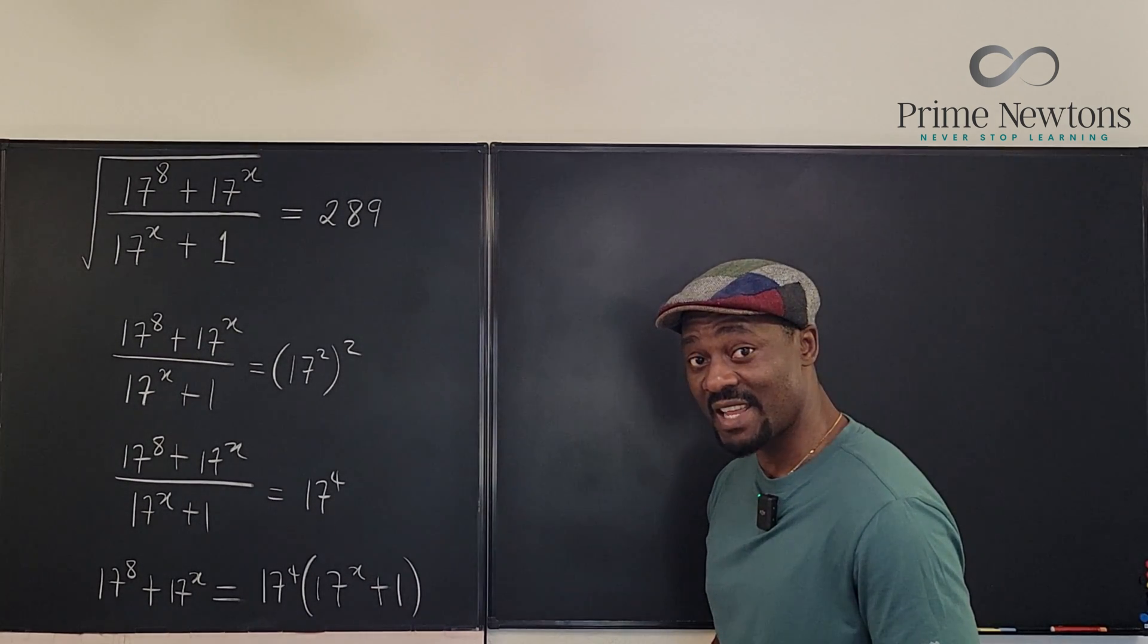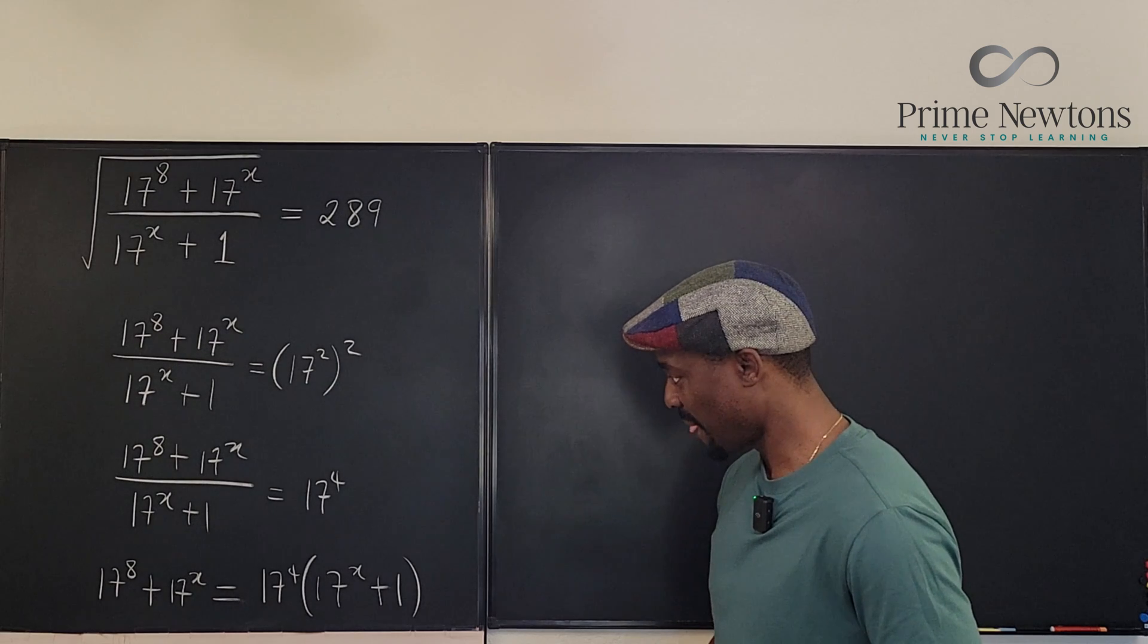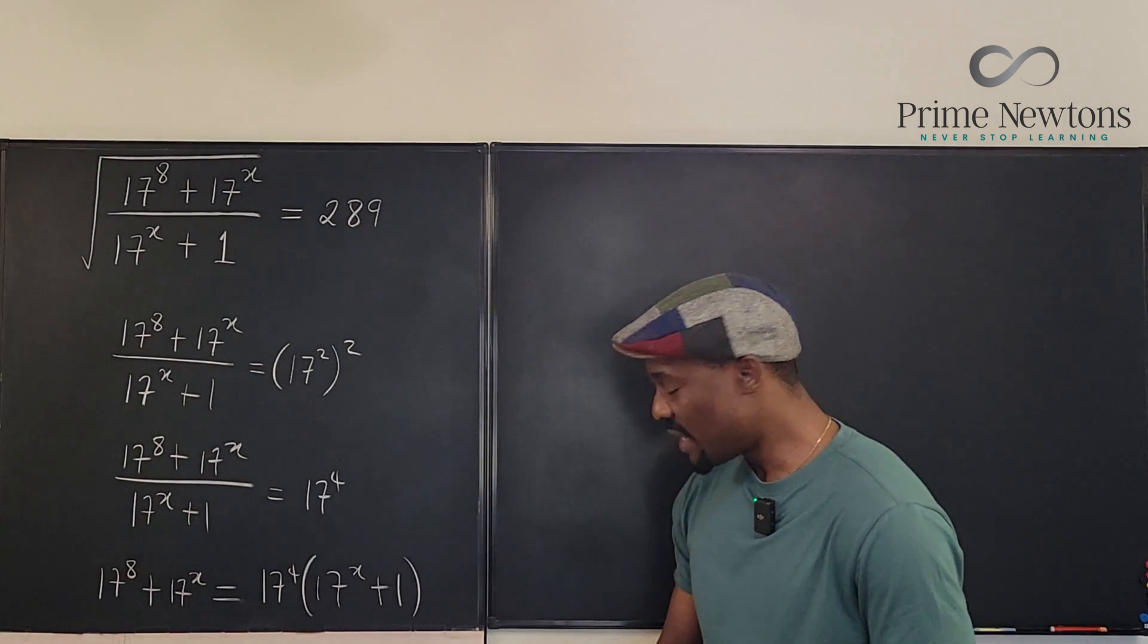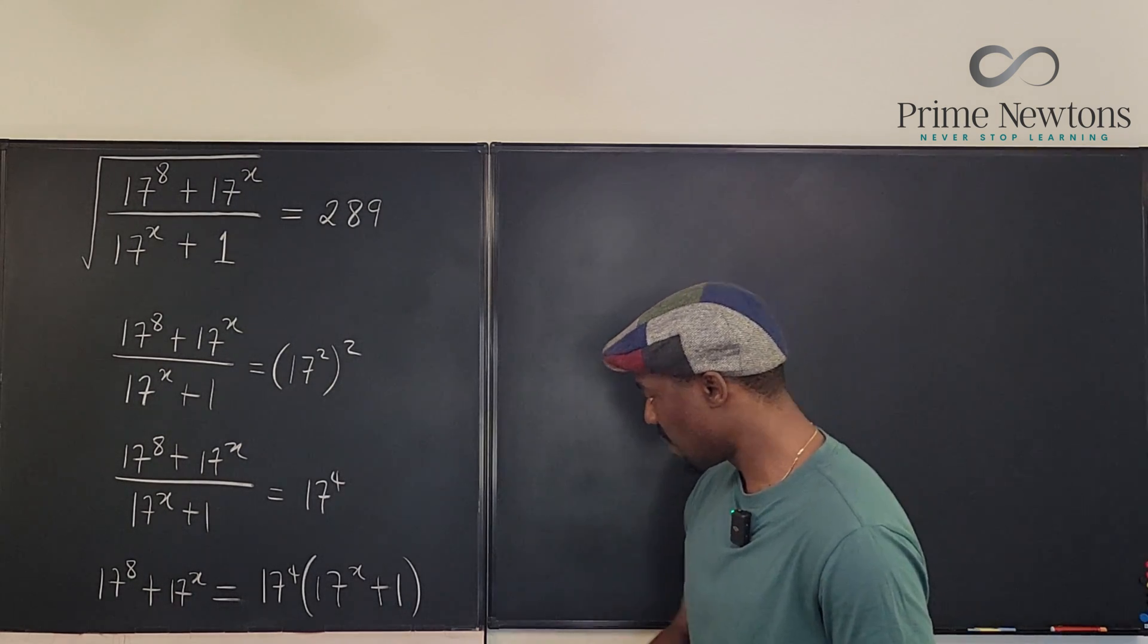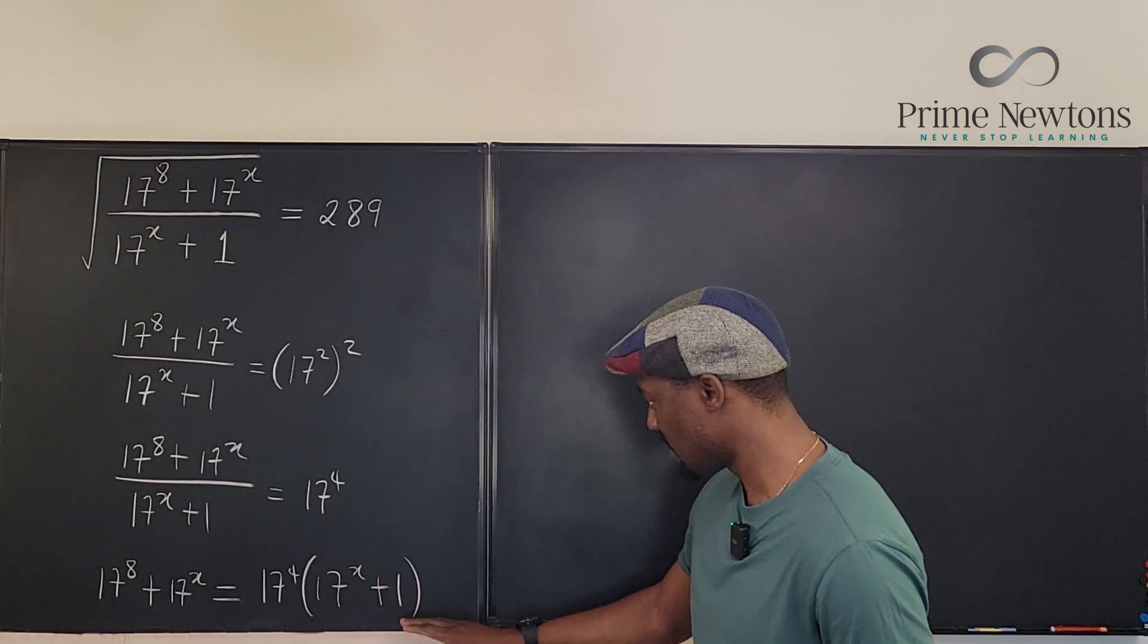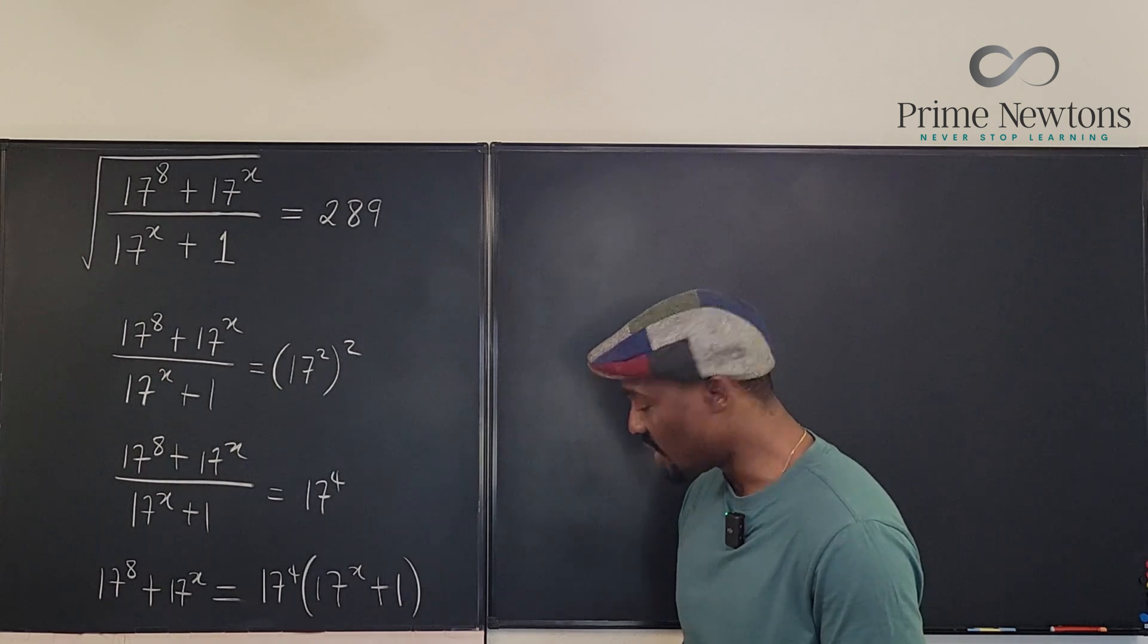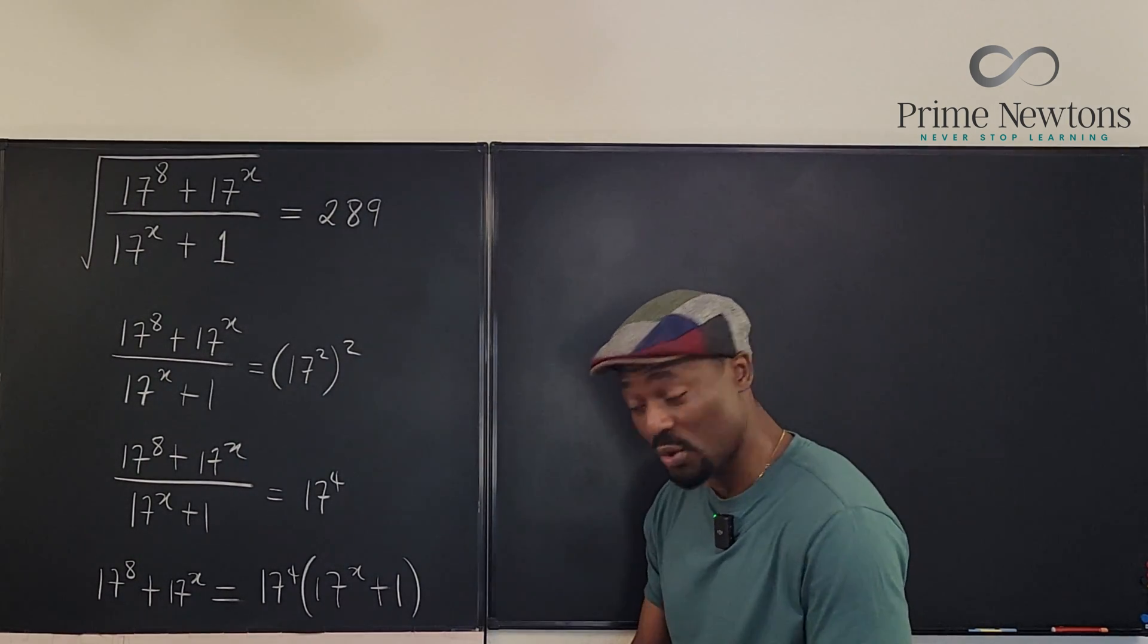Now, because this is an exponential equation, you want to be careful how you arrange things. You may start drawing inferences. You might start saying, does this look like this? Yeah. Now, trying to compare both sides might be dangerous at this moment. Let's do some more simplification.